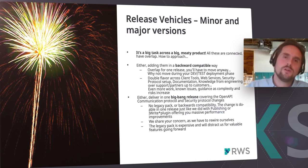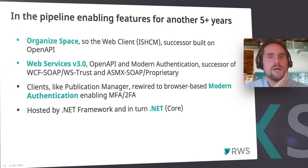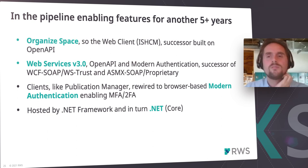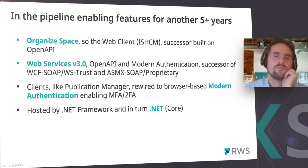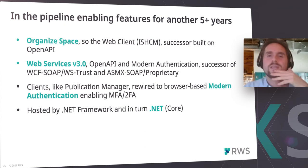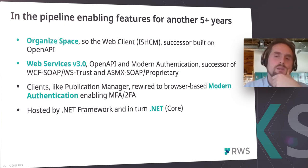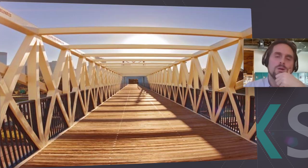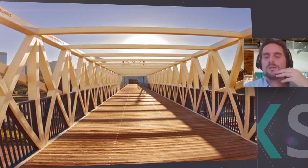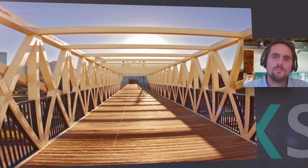Those are some thoughts for the future. What is in our pipeline: organized space is a big visible piece, replacing the web client, built initially on a private OpenAPI. When we are ready for the big change, we will open it up to become web services version 3.0 — OpenAPI with modern authentication and all of our tooling. All of our tooling will have to be rewired to work with that, all moving into the new .NET ecosystem. That's the bridge we are crossing at the very moment. Thank you for being present in this session.